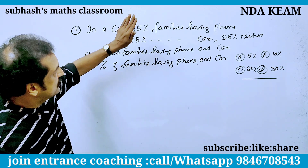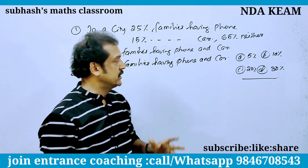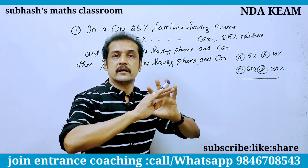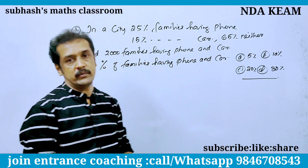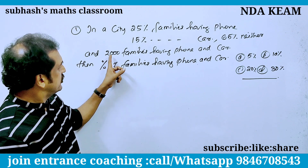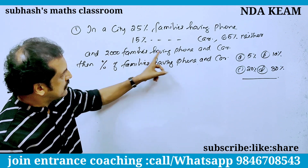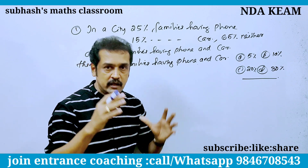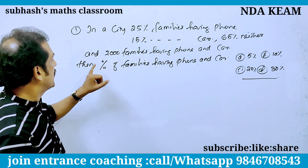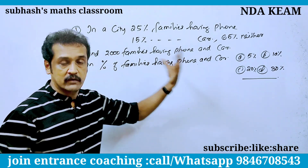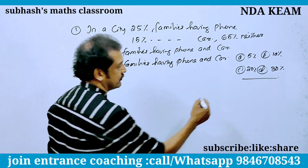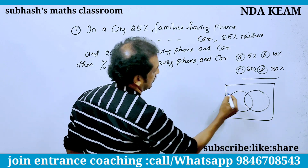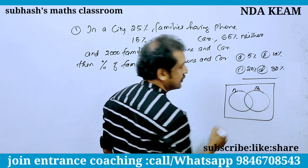In the city, 25% of families have phones, 15% have cars, 65% of families have phones and cars. That means we need to find the percentage of families that have neither a phone nor a car. We can get that information right now.